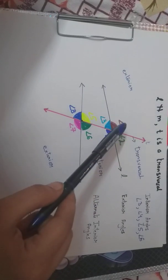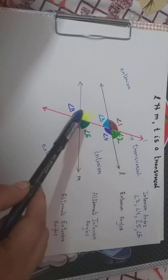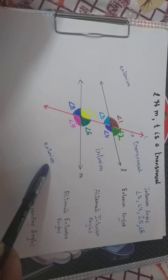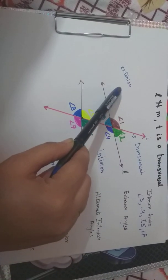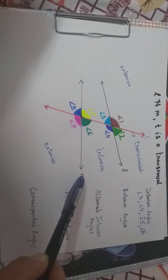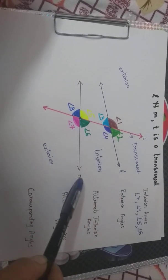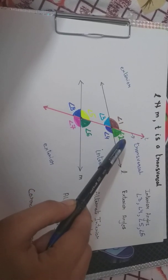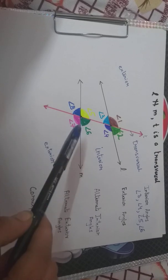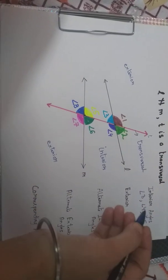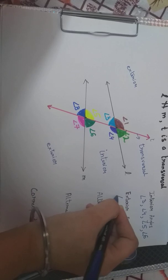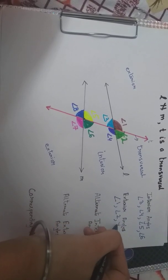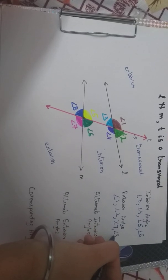Now angle 1, angle 2, angle 8, and angle 7 — they lie at the exterior space of these lines, so they are called exterior angles. Angle 1, angle 2, angle 8, and angle 7 are called exterior angles.